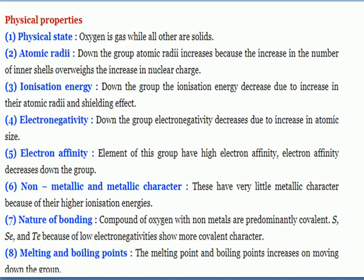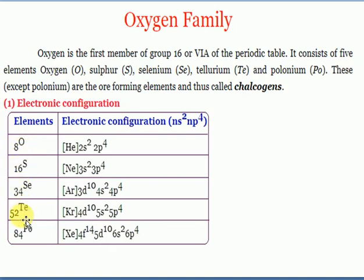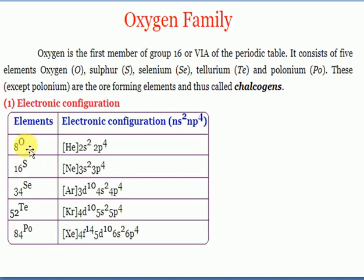Regarding melting and boiling points: going down the group, metallic character increases, and melting and boiling points increase. Oxygen is a gas and polonium is a solid, so polonium has the highest melting point. One important point: water has the highest boiling point compared to H₂S, because water contains hydrogen bonding which is not possible in H₂S (hydrogen sulfide, which has a rotten egg smell).